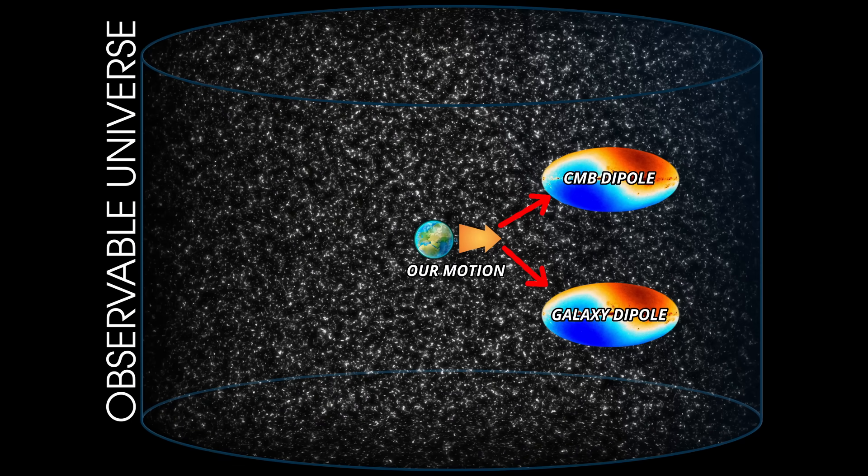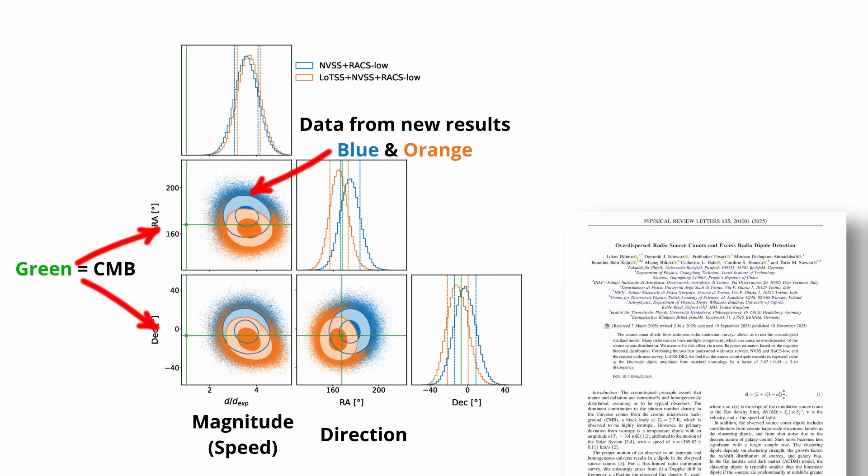In that picture, any dipole in the galaxy count must come from our motion, not from real structures in the universe. When you put those ideas together, the prediction is very clear. If the CMB dipole tells us how fast we're moving, and if matter on the larger scale has no preferred direction, then every large-scale matter survey should show the same dipole. Same direction, same magnitude. That's the expectation. That's the foundation that the model is built on. And this is exactly where the new radio results break away. The direction lines up almost perfectly. The speed does not.